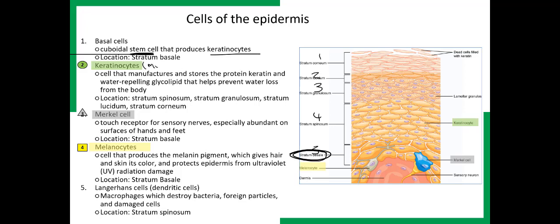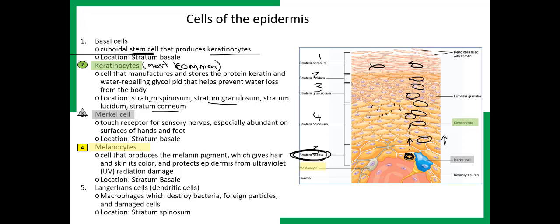The next type of cell are the keratinocytes, and these are the most common cells of the epidermis. They're found in the other four layers of the epidermis. The keratinocytes are joined together — you can see the junctions connecting them. They're produced at the bottom layer and then travel upward over time. Where they reach the stratum granulosum, they contain these granules — we'll talk about what those contain in the next slide.